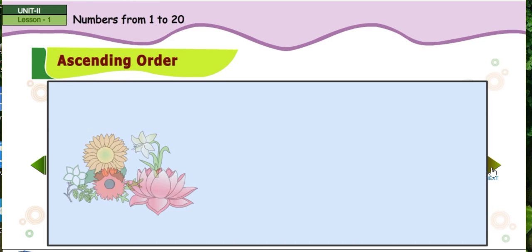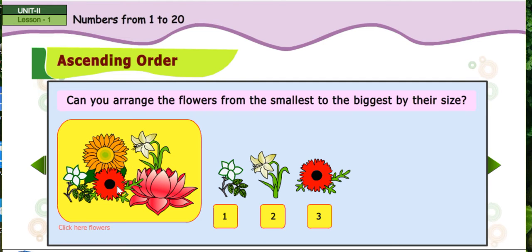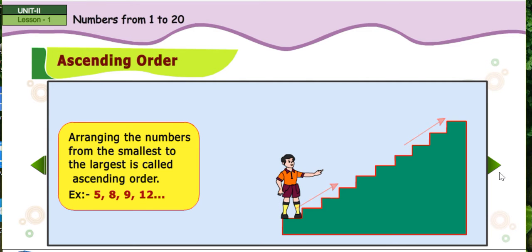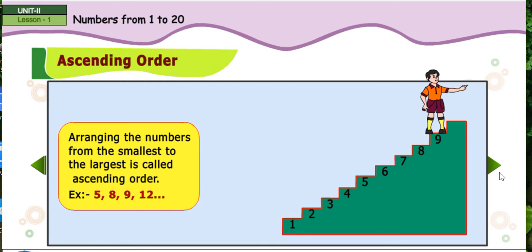Ascending order. Can you arrange the flowers from the smallest to the biggest by their size? One. Two, three, four. Five. One, two, three, four, five, six, seven, eight, nine, ten.